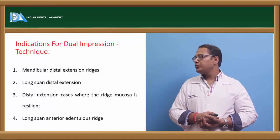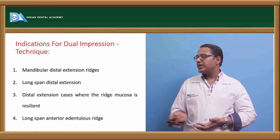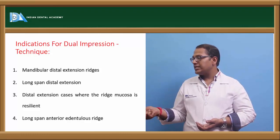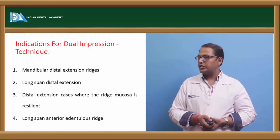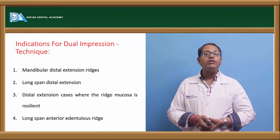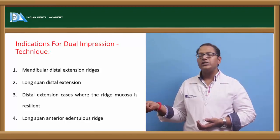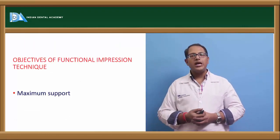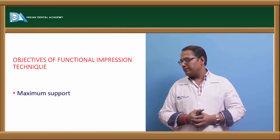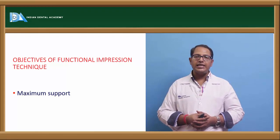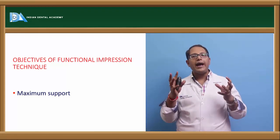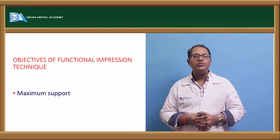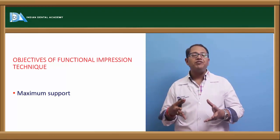The indications of the dual impression technique include: mandibular distal extension cases, long-span distal extension cases, distal extension cases where the ridge mucosa is very resilient or a flabby ridge is present, and long-span anterior edentulous ridges which can also result in a combination syndrome effect. The objective of functional impression techniques is to obtain maximum support, which is also explained by the snowshoe effect.